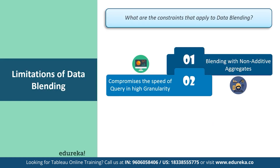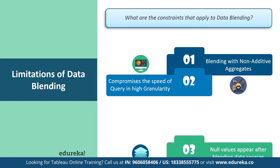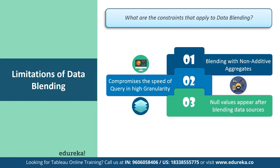When you blend on a field with a high level of granularity — suppose date instead of year — queries can be slowed down, so basically the speed of the query gets compromised. Null values can also appear after blending the data sources.